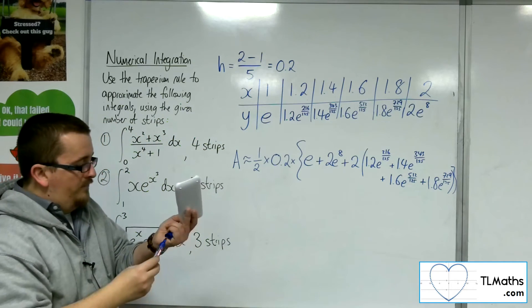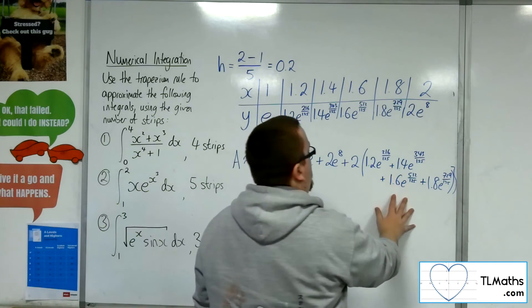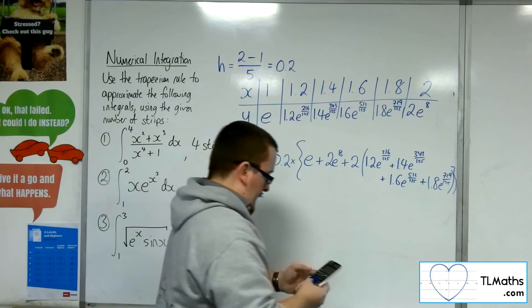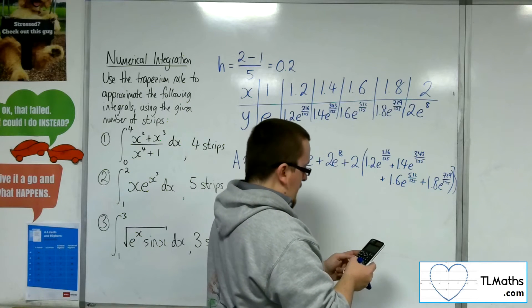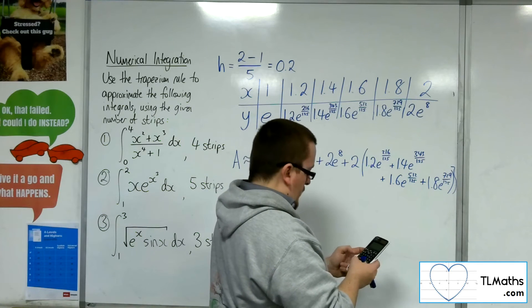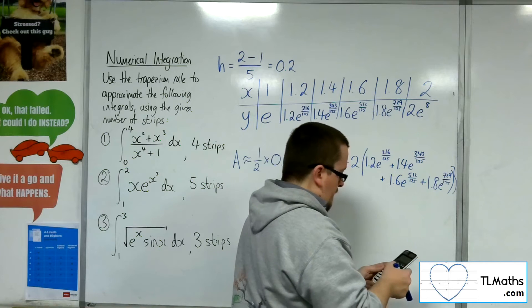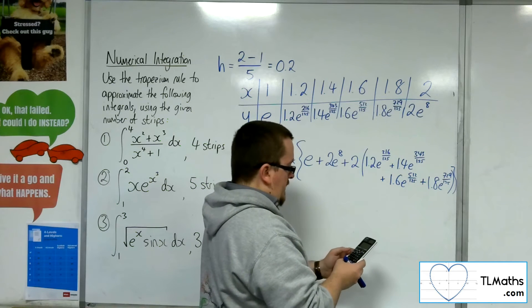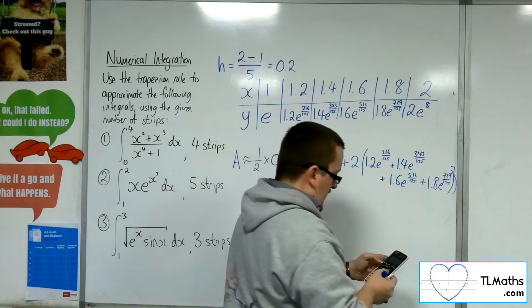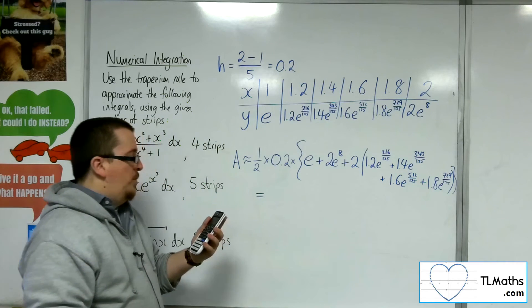Now if you've typed them into your calculator and you use decimal approximations to it, as long as you're using a reasonable degree of accuracy for this, you should be all right. So 1.2 times e to the 216 over 125. Plus 1.4 times e to the 1.4 cubed. Plus 1.6 times e to the 1.6 cubed. Plus 1.8 times e to the 1.8 cubed.